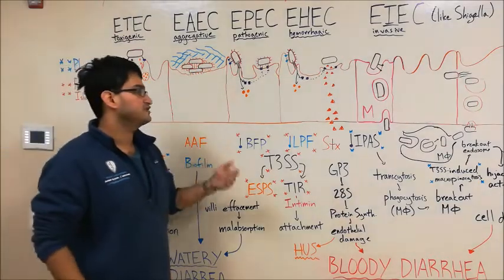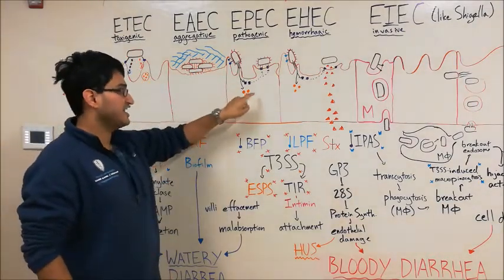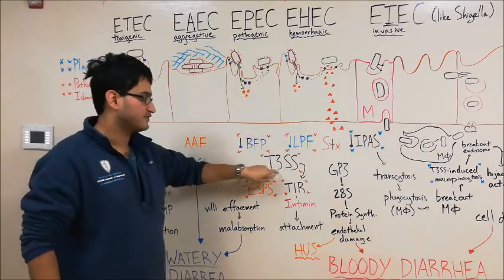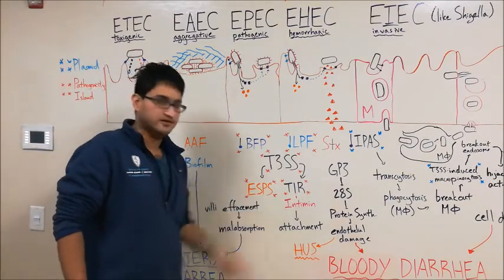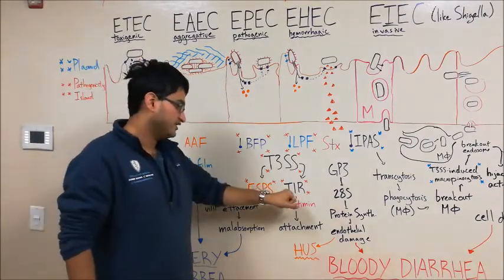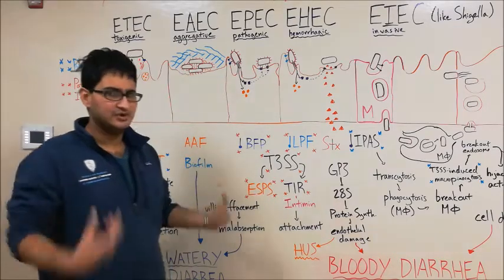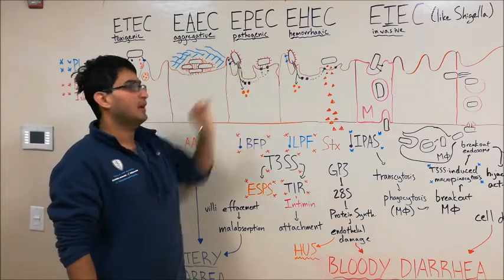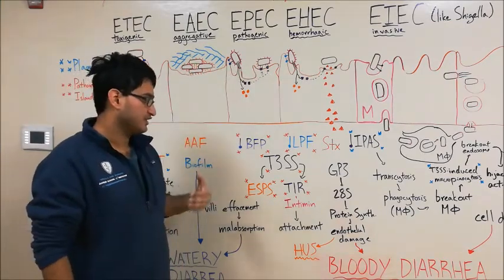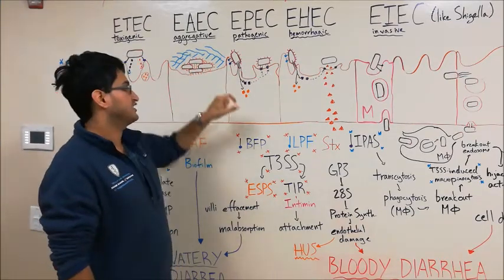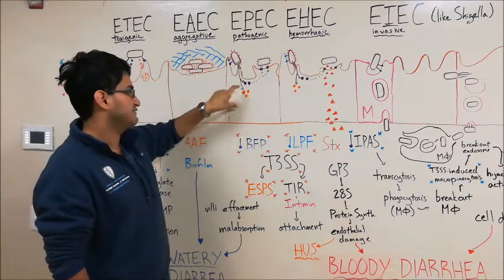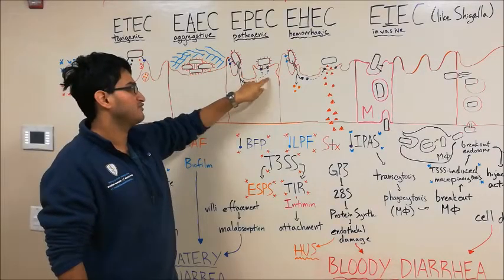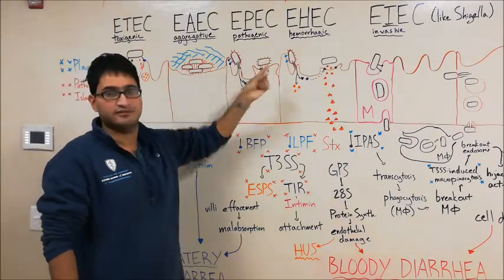Another important protein that EPEC secretes into the enterocyte through its type 3 secretion system is TIR. This stands for translocated intimin receptor. Normally, the bacteria will express an intimin protein, as seen in pink here, but it can't bind to anything. So in order to give it a receptor it can bind to, it's going to give the enterocyte the intimin receptor to actually express on its own membrane to bind to the intimin on the bacteria. I think that's pretty cool.